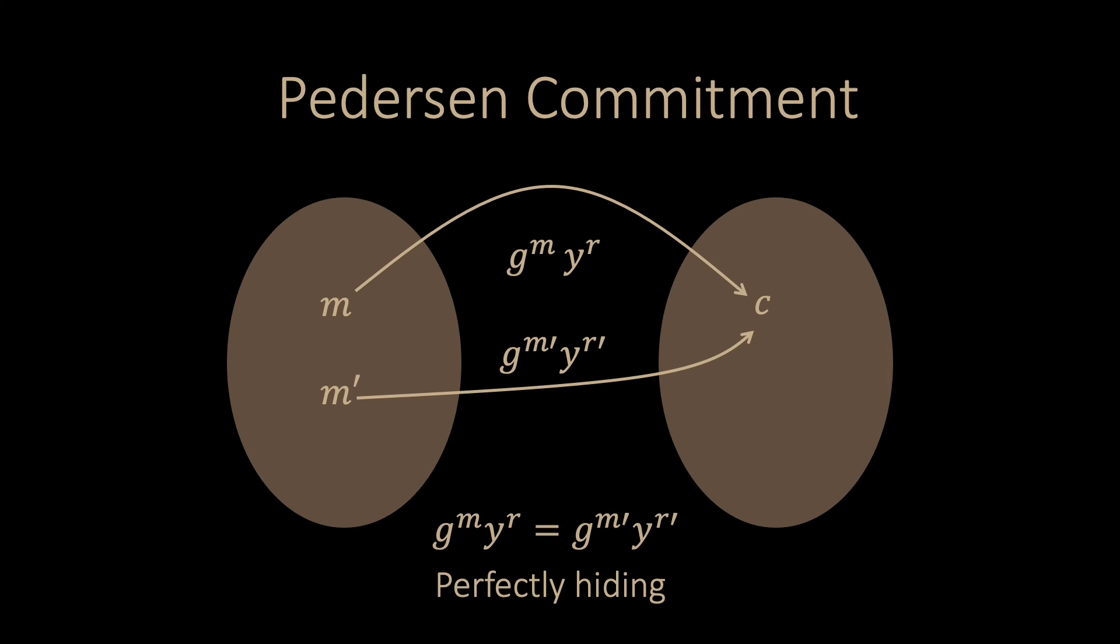Such a mapping can be easily seen by substituting y with g to the power of x and reducing it to this linear equation. Here we can see that one can compute for any m prime a new r prime that has the same commitment.